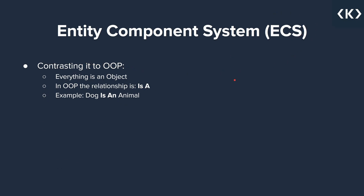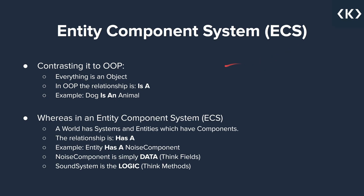Whereas when we're talking about an Entity Component System, this is just a way to organize your classes. What we have here is a has-a relationship. At a high level, you have a world which contains systems and entities — those are the two main things contained within a world. These entities can have different components, and depending on what components they have, different things might happen. For example, an entity might have a noise component. Any component is basically just data — integers, even complex data like custom classes.